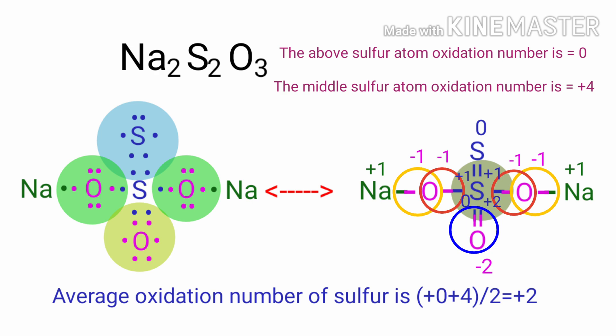Therefore, in sodium thiosulfate, the middle sulfur has plus four oxidation number and the above sulfur has zero oxidation number. So the sulfur atoms have an average oxidation number of plus two in sodium thiosulfate.